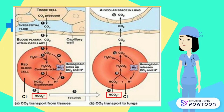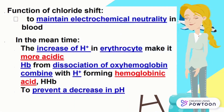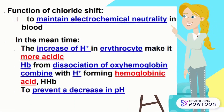The bicarbonate ion diffuses out of the erythrocyte and is transported in plasma to the alveolus. As bicarbonate ion diffuses out from the erythrocyte, the charge will be positive. Chloride from the dissociation of sodium chloride then diffuses into the erythrocyte, so the chloride shift occurs. The function of the chloride shift is to maintain electrochemical neutrality in blood.